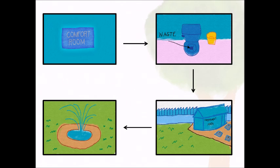We all know that at MCL, when you went to the comfort room and you produced a waste, this waste will flow to the treatment plant at the other side of MCL, and the treated water will burst out at the water fountains of MCL.